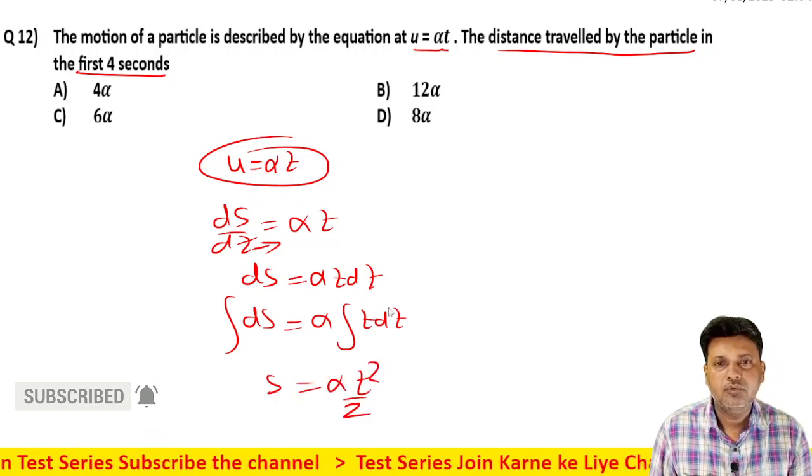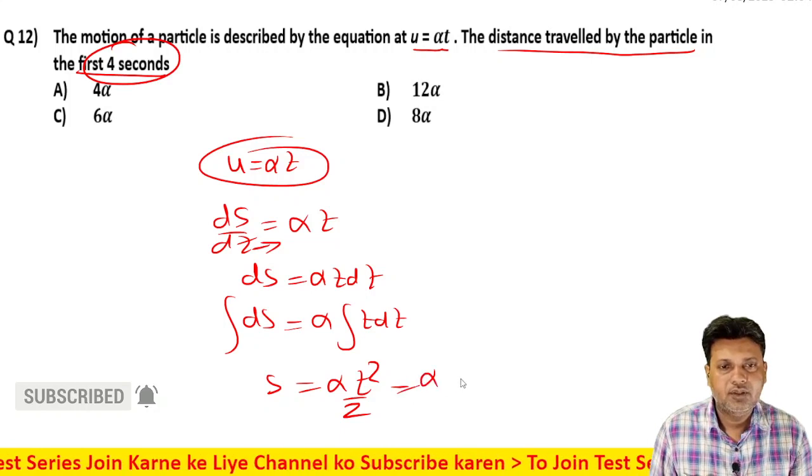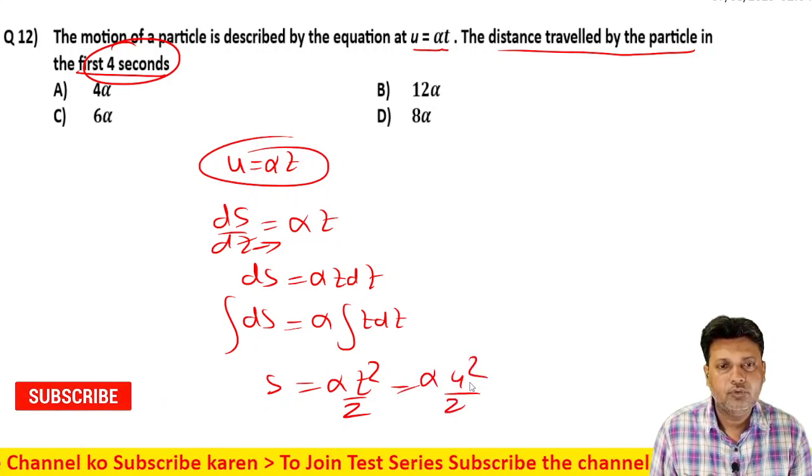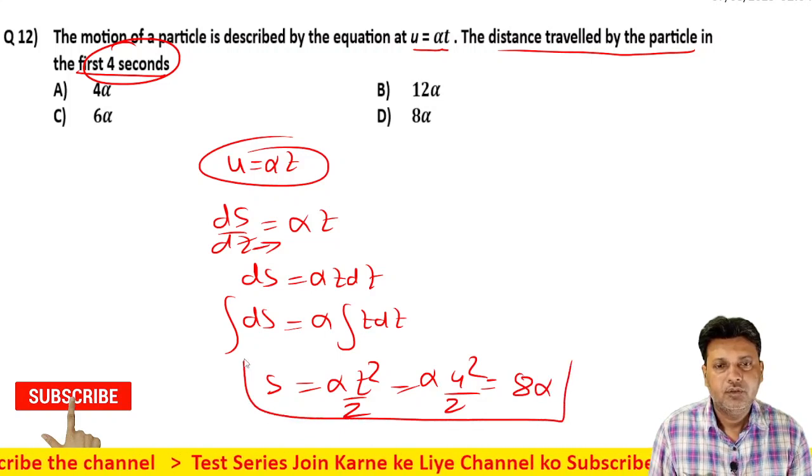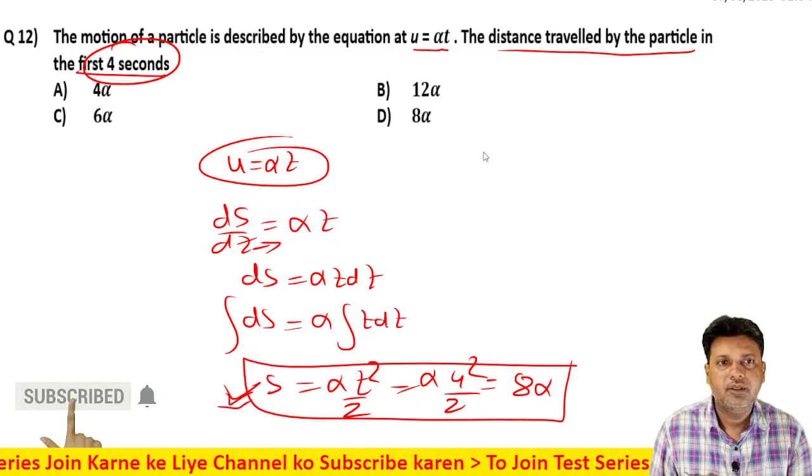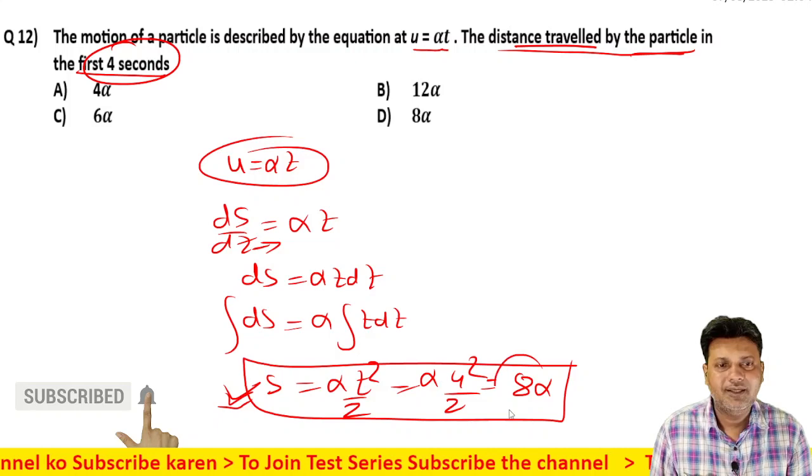t ki value 4 seconds given, so alpha into 4 square upon 2. 16 by 2 equals 8. 8 alpha. Distance traveled by the particle is 8 alpha.